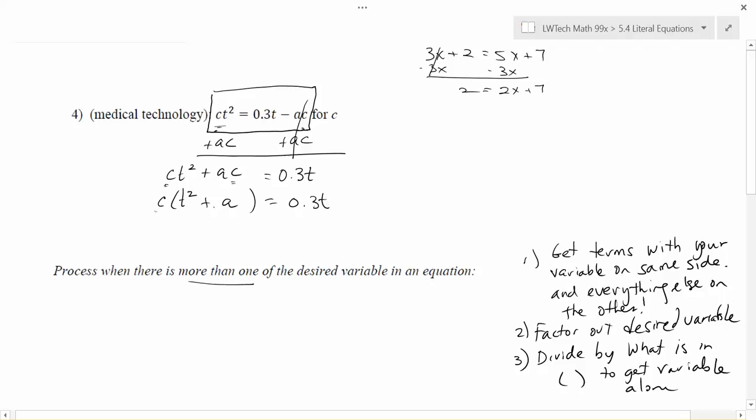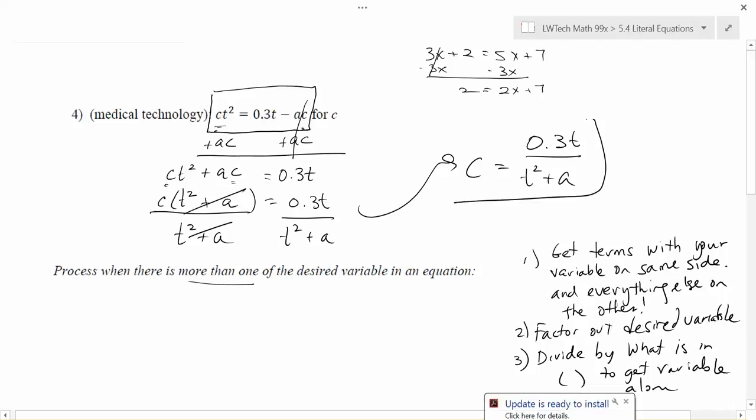So in this case, it was being multiplied by T squared plus A, so I'm going to divide by T squared plus A on each side. Here the T squared plus A's cancel, leave me with my C by itself. And on the right, I have 0.3T on top and T squared plus A on the bottom. And this is a nice rational expression. The C's by itself, it's the only C in the problem.